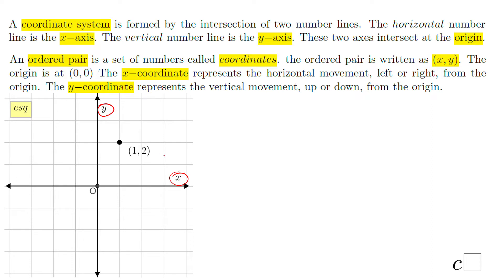Coordinates — if you notice here, I have a point 1 and 2. The first one represents the x-coordinate, which means the horizontal movement, left or right, from the origin. The second one is the y-coordinate, which is the vertical movement, up or down, from the origin.